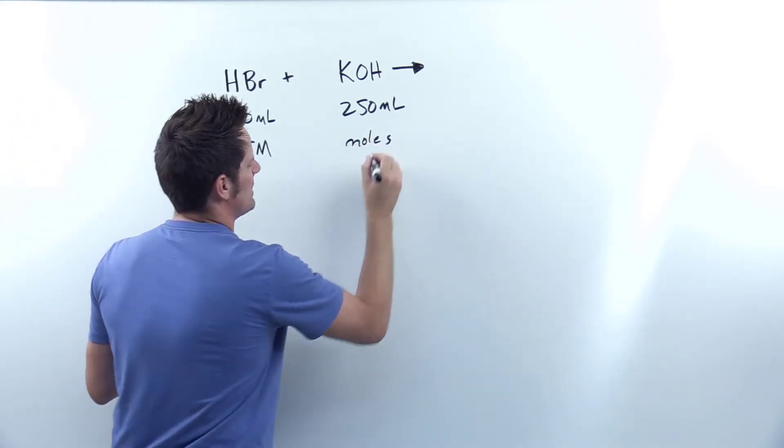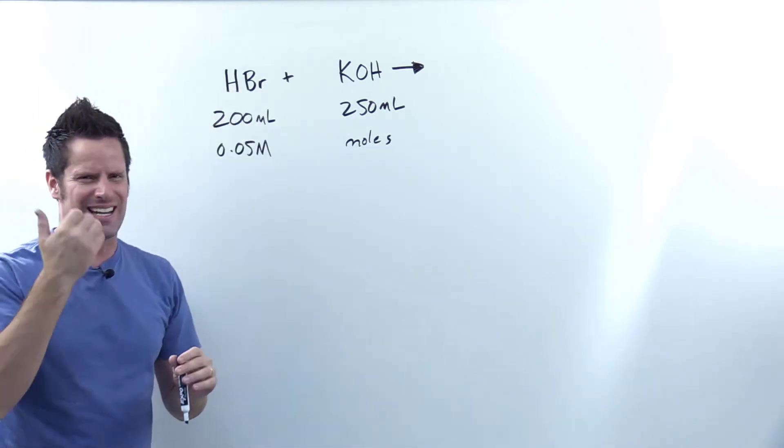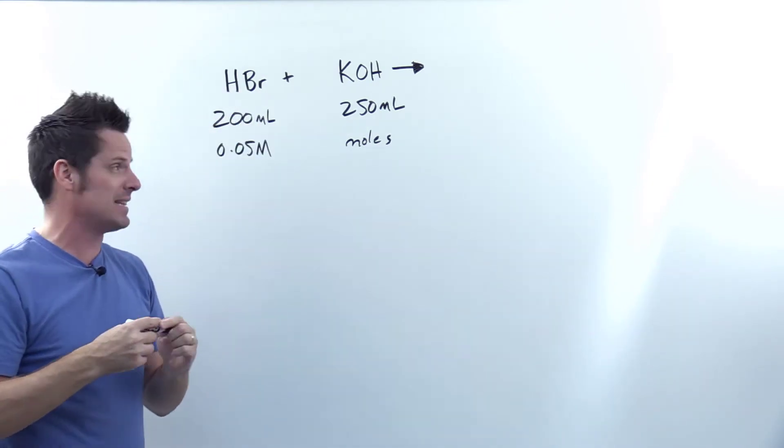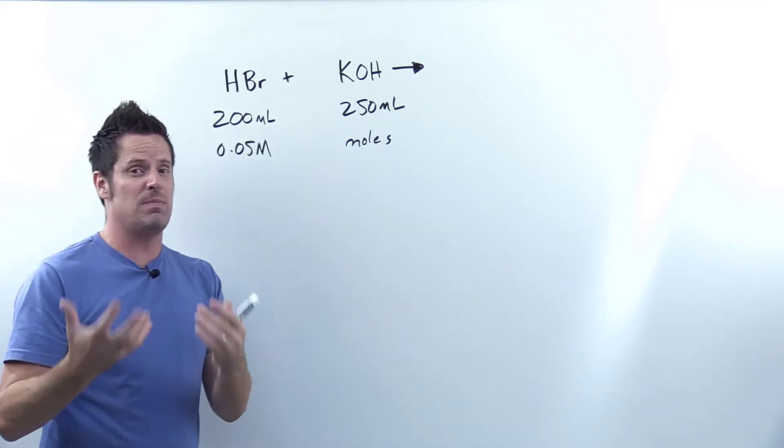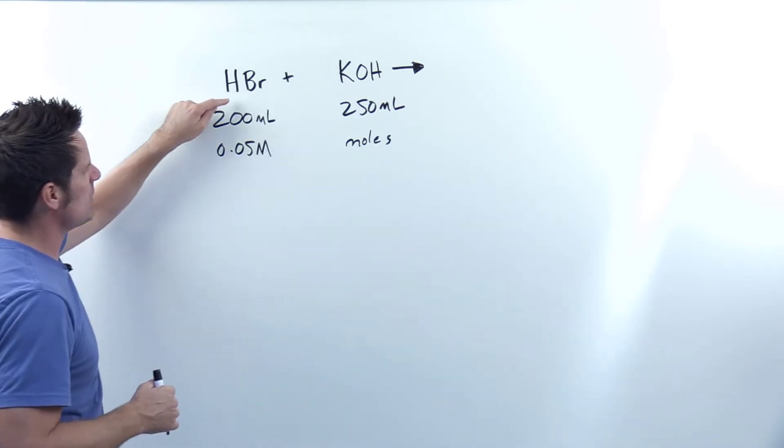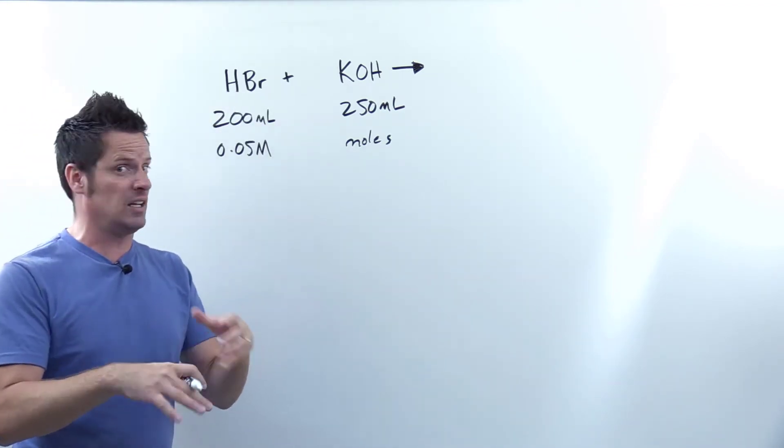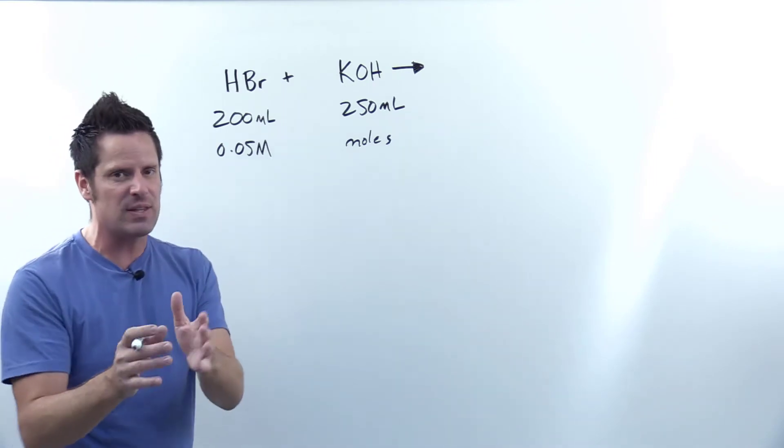So to begin, what I want to do is write down my acid reacting with my base so that I can get an idea of what actually happens when I combine these two. So using the principles of acid-base chemistry that we talked about in an earlier video linked in the description below, what happens when I react HBr with KOH? Well yeah, strong acid-strong base equations react like double displacement, also called metathesis reactions.